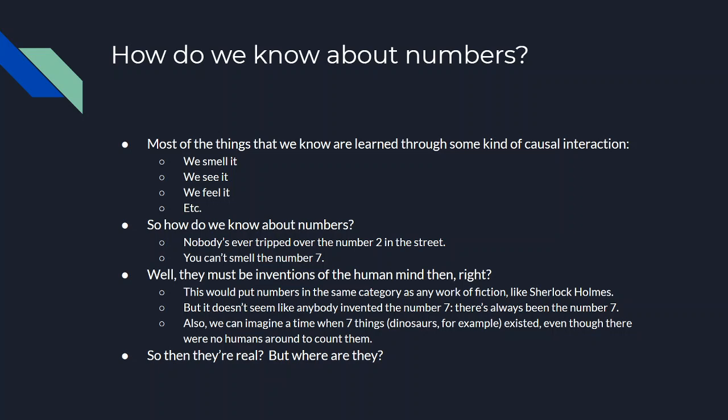But that doesn't quite feel right, because that would put numbers in the same category as any work of fiction — like Sherlock Holmes. It doesn't seem like numbers are purely inventions in the same way Sherlock Holmes was an invention of Arthur Conan Doyle. Conan Doyle sat down and wrote Sherlock Holmes, but it doesn't seem like anybody invented the number seven. There's always been the number seven. We can imagine a time when seven things existed — even back in dinosaur times, seven velociraptors running around somewhere — even though there were no humans around to count them.